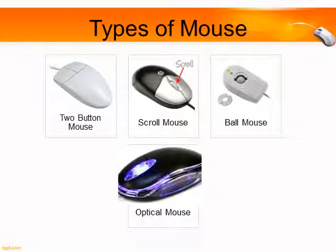A scroll mouse has a scroll wheel in the middle, between the left button and right button. We can move a page up and down by moving the scroll wheel. A ball mouse has a ball under it; this ball helps us to move the mouse pointer on the screen.